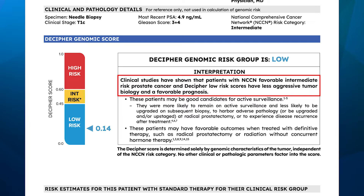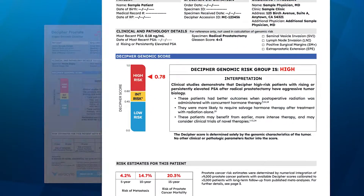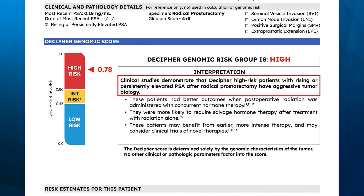In the biopsy report, the interpretations and findings are those most relevant to the patient's NCCN risk group and Decipher genomic risk group. In the radical prostatectomy report, the interpretation is one that is most relevant to the patient's postoperative PSA findings — that is to say, whether the patient has a persistently elevated or rising PSA or if the PSA is undetectable.